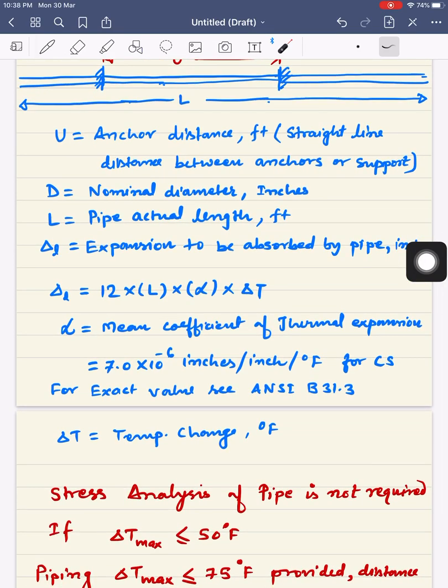Delta L can be calculated by this formula: 12 times L times alpha times delta T, where alpha is the coefficient of thermal expansion, L is actual length of pipe, and delta T is the maximum temperature change.